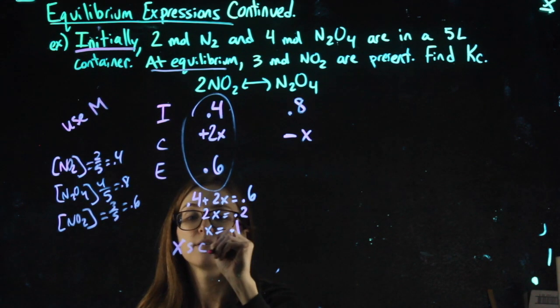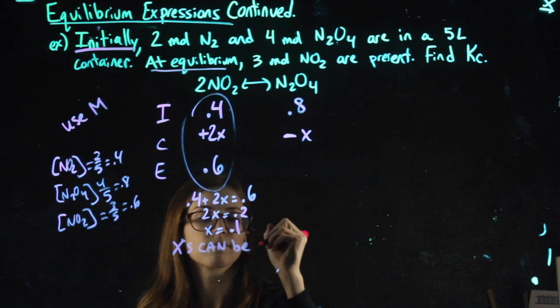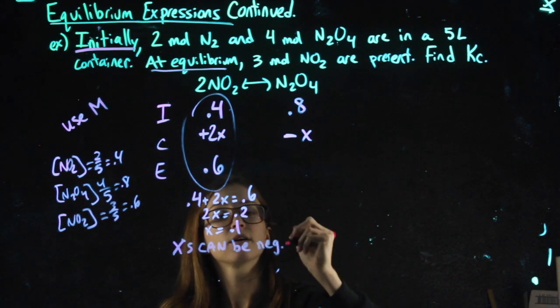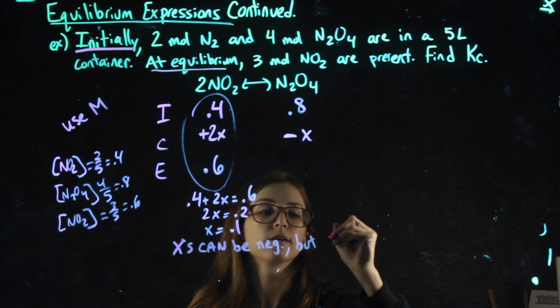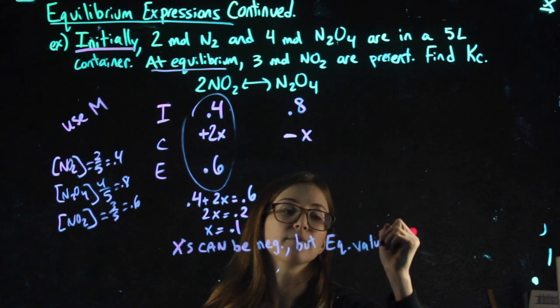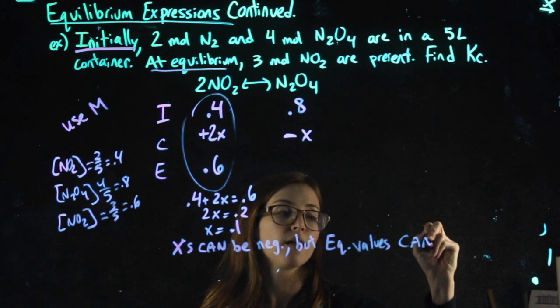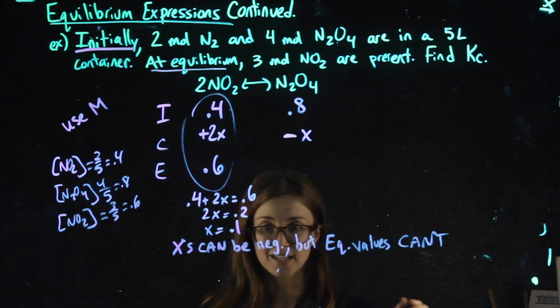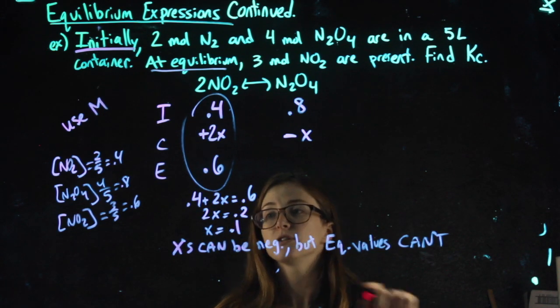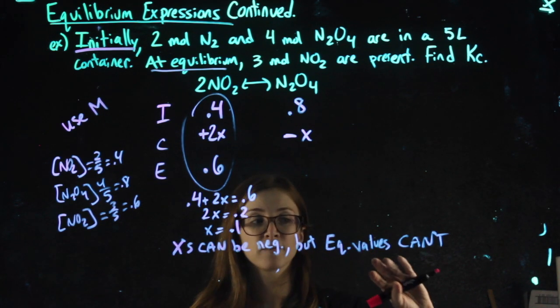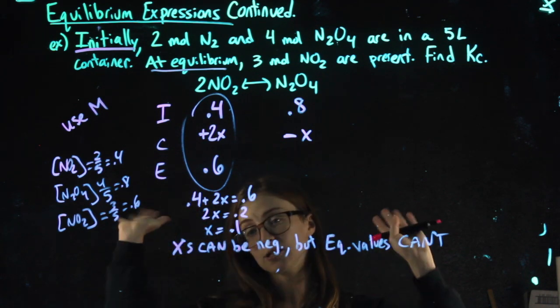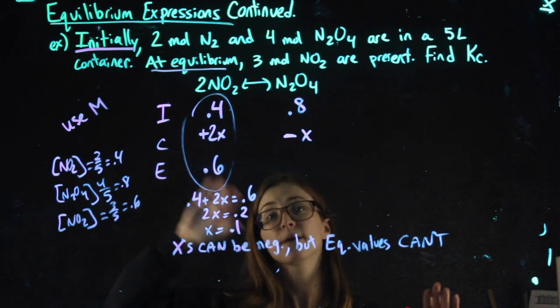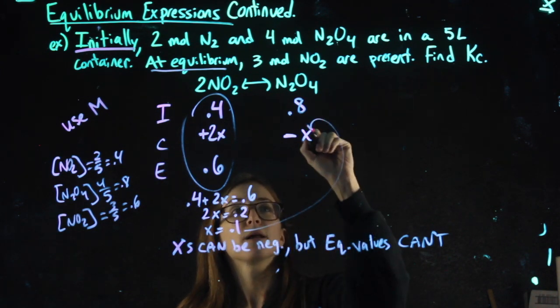But make sure that you never, ever, ever get an equilibrium value that's negative. You can't end with a negative amount of stuff. It's not a thing. You did something wrong. So x's can be negative. Equilibrium values cannot. In this case, though, I don't even have a negative x value, and that's because I set this up in a logical way. That x can go and be plugged in, 0.8 minus 0.1 gets me 0.7.